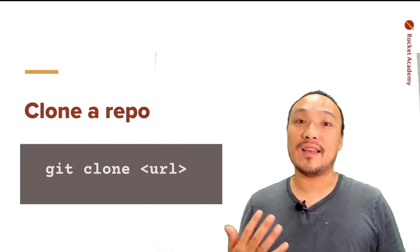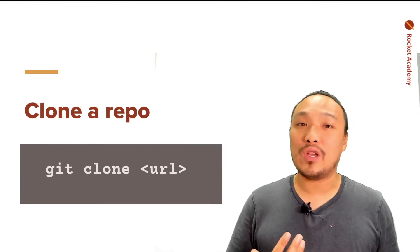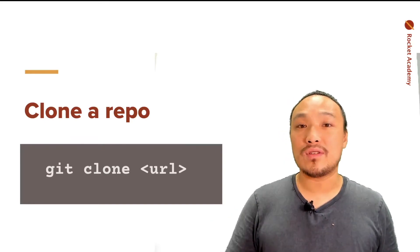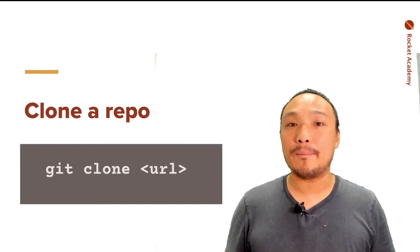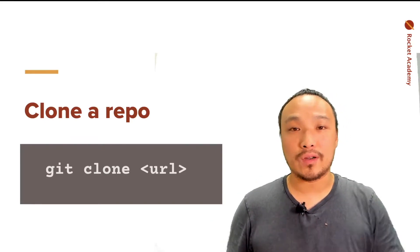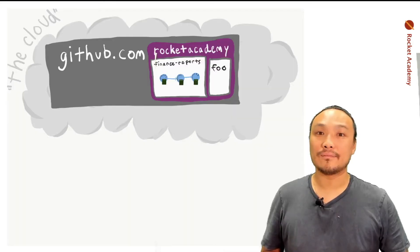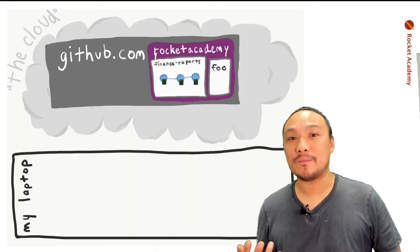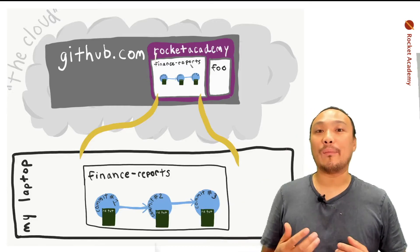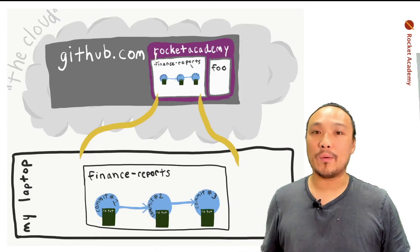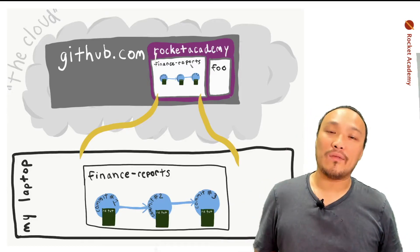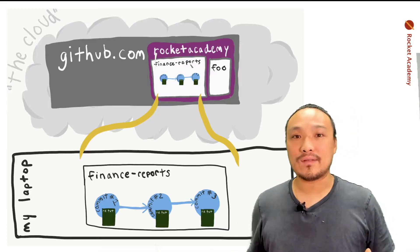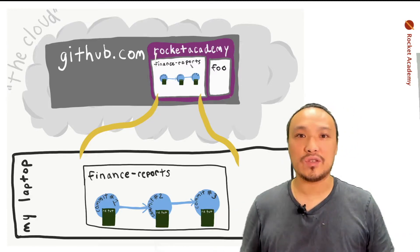Now let's come back to Git clone. This is a command that you run on your command line that downloads a repository from GitHub to your computer. It's going to download a copy of the repo — and this is not just a copy of the code, it's also a copy of all the commits and the record of all the changes to the code.